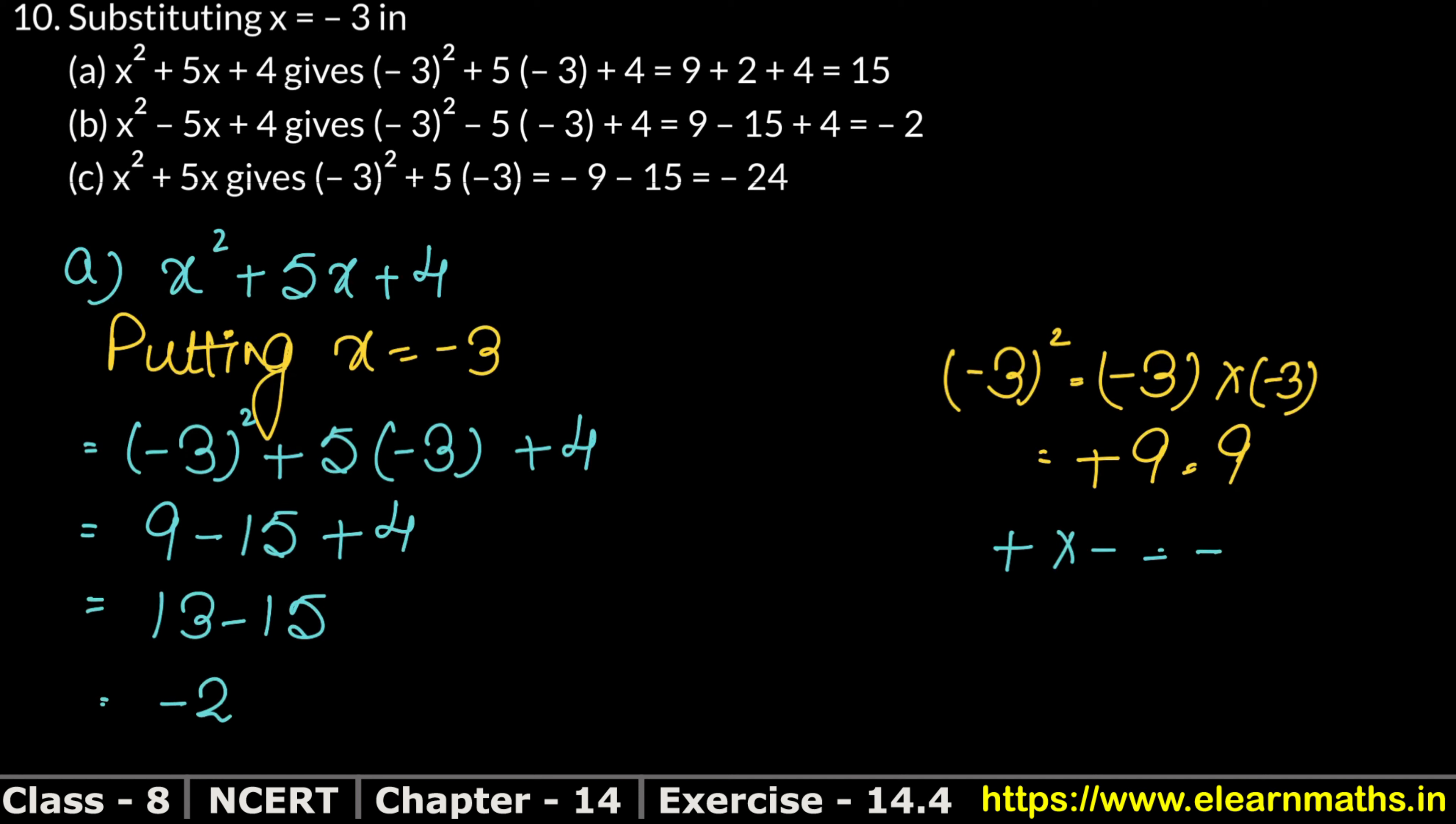So see, this is what we say: 9 plus 2 plus 4. This will have a value of minus 15, so it will be minus 2. If we put the value of x to minus 3 in this equation, then our answer will be minus 2, but it should not be.